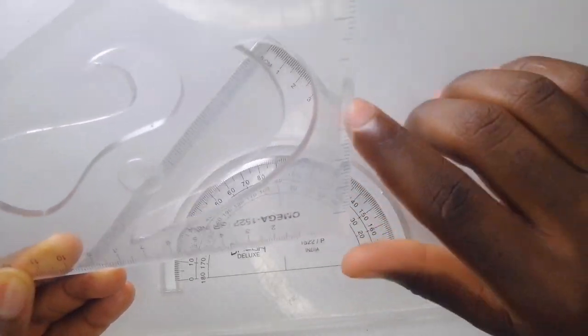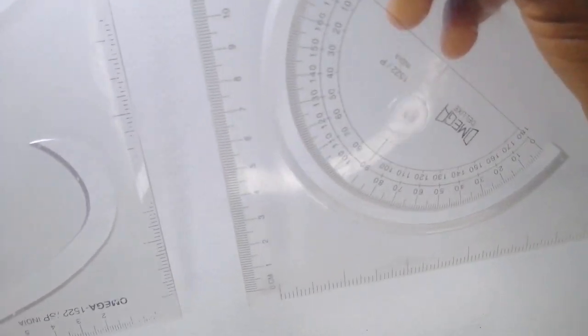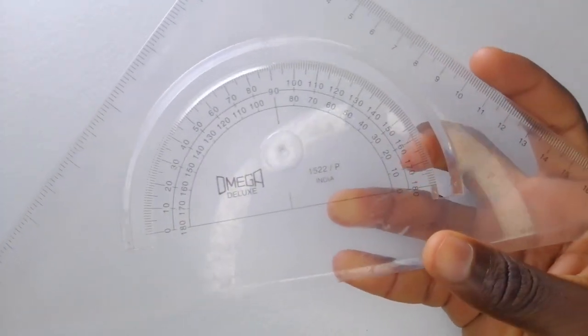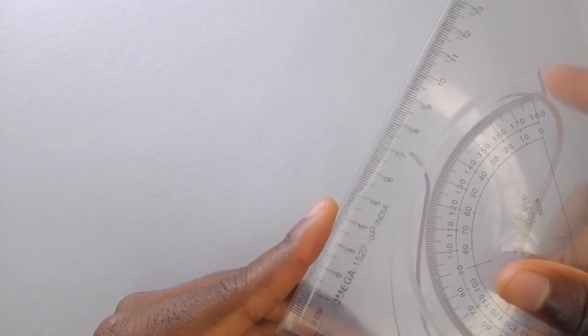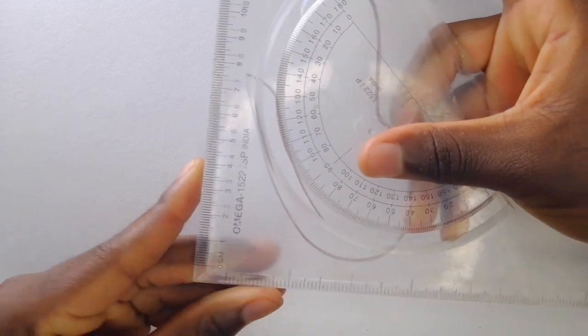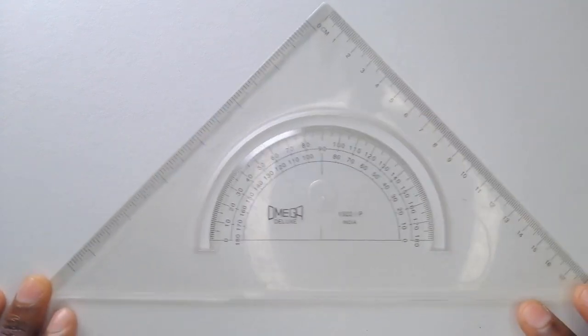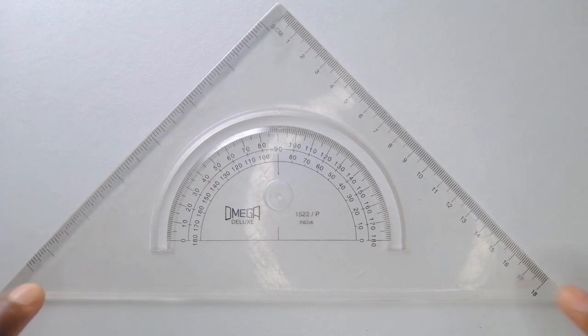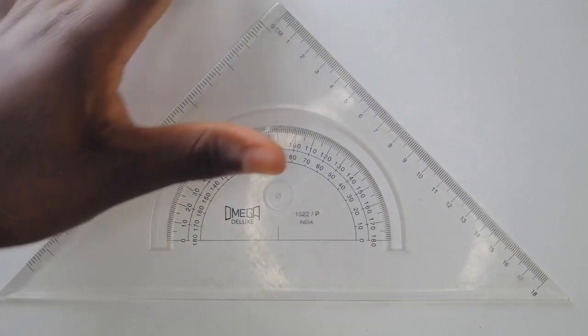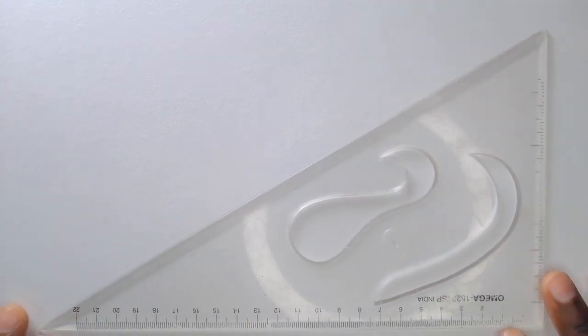This corner you always see here is 90 degrees. Both set squares have this angle. You can see if I pair them up together, they match. But the angles on the other corners are different. The set square where you have 45 degrees here and on this side is called the 45 set square.